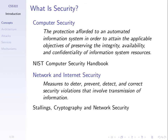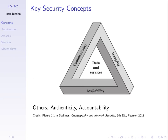So let's look at some of these things in more depth. In the definition of computer security, we want to preserve integrity, availability, and confidentiality. Those are three concepts that come up quite often when talking about security. Confidentiality, integrity, availability — CIA. Not the organization, but the combination of these three concepts.